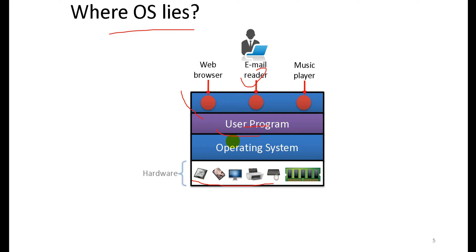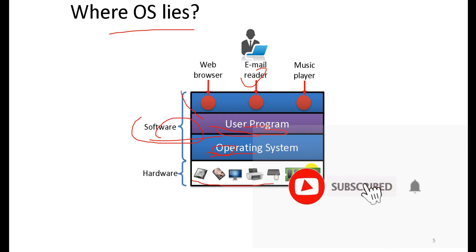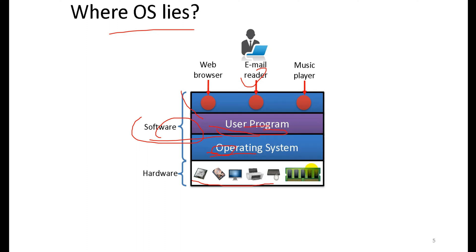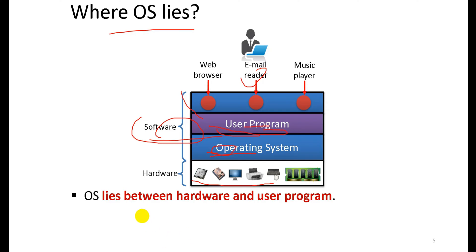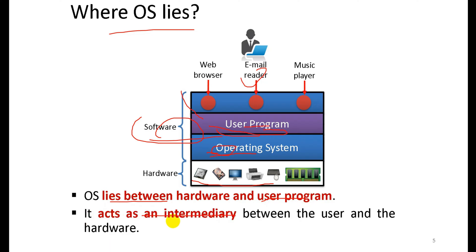So the operating system acts as an intermediary between user programs and hardware. Under software there is the user program and the operating system — which is one part of system software. Under user programs we have web browser, mail reader, and music player. The hardware layer includes the CPU, monitor, storage devices such as RAM, and other components.